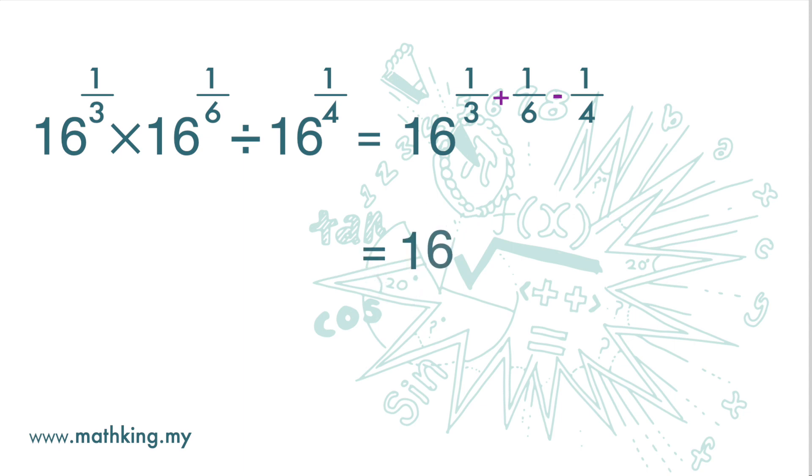Next, we need to find a common denominator. The common multiple of 3, 6 and 4 is 12.